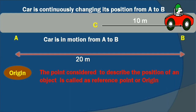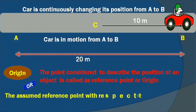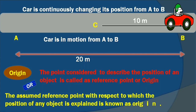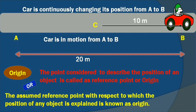In other words, the assumed reference point with respect to which the position of any object is explained is the reference point or origin. In the same example, when we say point B is at 20 meters from point A, then A is our origin. When we assume point C as the reference point, we say 10 meters distance is between B and C, considering C as origin. By the help of reference point or origin, we can explain that motion is a relative concept.